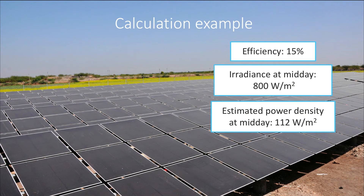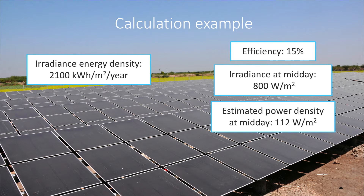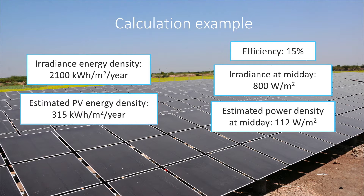Using the data from the map and the estimated efficiency of a solar module, the estimated energy density comes to approximately 0.15 times 2100 kWh per square meter per year, which equals 315 kWh per square meter per year. This is how much we can harvest per square meter of active PV module surface area.